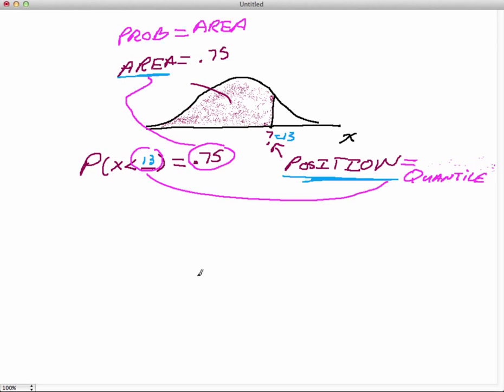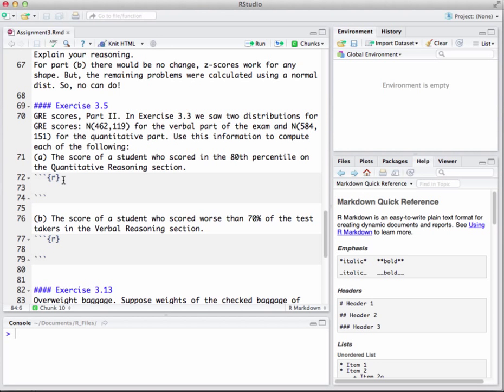Let's go back to the problem statement here. Let's go back to RStudio and let's go tackle Part A. So in Part A here they say they want the score of a student who scored in the 80th percentile on the quantitative reasoning. Well what would they mean by that?